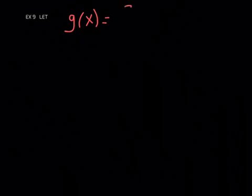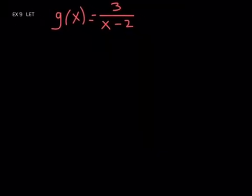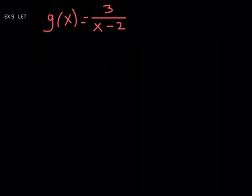We got some brand new functions on the board here. Example nine, let g of x be 3 over x minus 2. Do you know what kind of function that is? If you said a rational function, you are correct. We dealt with rational functions in an earlier chapter.